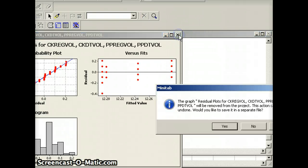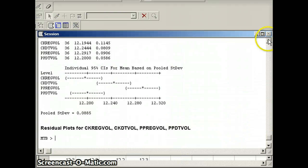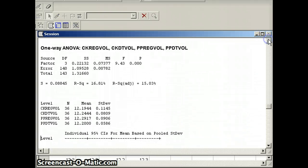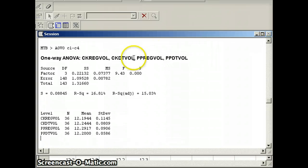So we will remove the picture for now. And we'll take a look at what we have. So we're getting one-way ANOVA, Coke regular volume, Coke diet volume, Pepsi regular volume, Pepsi diet volume. Our F statistic that we're interested in here is 9.43. And our p-value that we're interested in is 0. So if the p-value is small, we are going to reject the null hypothesis.